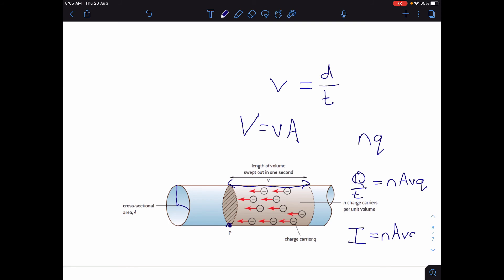...is the number of charge carriers per unit volume times the cross-sectional area of the wire times the velocity of the charge carriers times the charge on one of those charge carriers. And that gives us an expression from which we can work out how fast electrons are actually travelling in a wire, which is V.